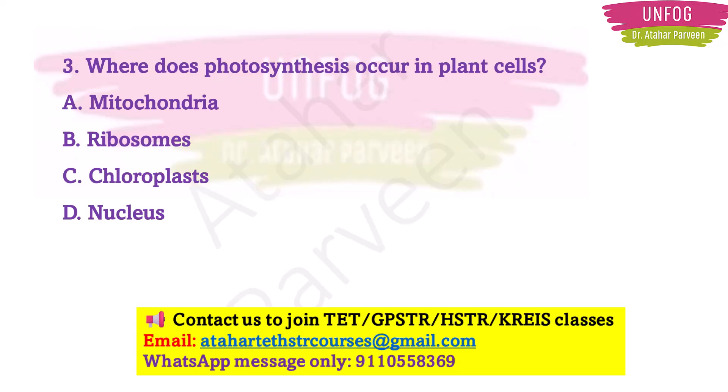Question 3: Where does photosynthesis occur in plant cells? The options are mitochondria, ribosomes, chloroplasts, and nucleus — all four are parts of a plant cell. The correct answer is chloroplasts. Photosynthesis is the process where food is prepared by plants in the presence of sunlight using chlorophyll, and it happens in the chloroplast. The word 'chloro' also gives you an indication toward the correct answer.